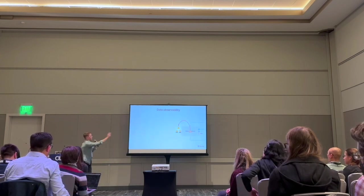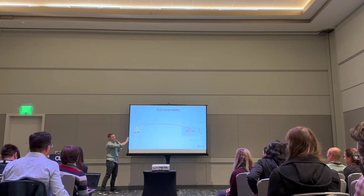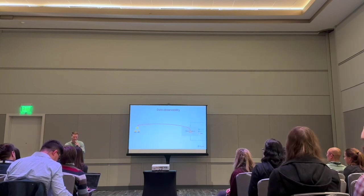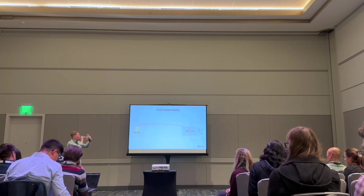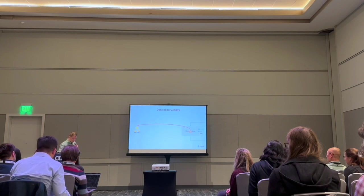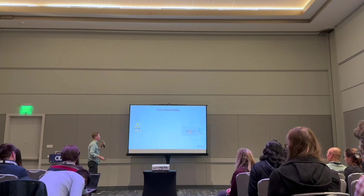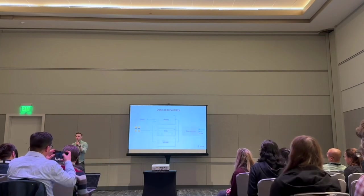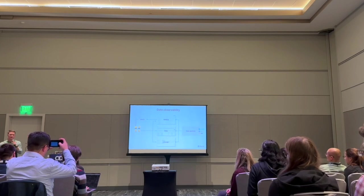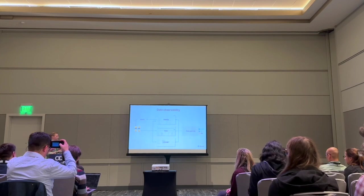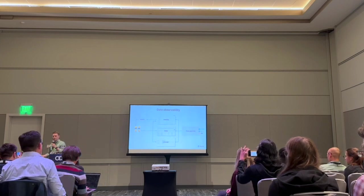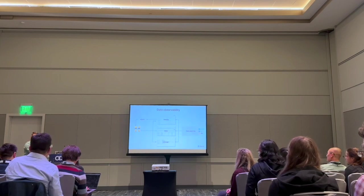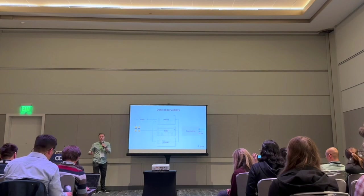Now let's talk about the actual components of the data observability system. If you've ever worked in SRE or DevOps, you might recognize these. In DevOps, observability means metrics, logs, and traces — the usual trifecta for infrastructure and application performance monitoring. In data, we can take the same idea and map it onto a data pipeline, but instead of metrics, logs, and traces, we're going to have metrics, data, and lineage. And then we need alerts to actually tell people that something's wrong and they should go look at it.